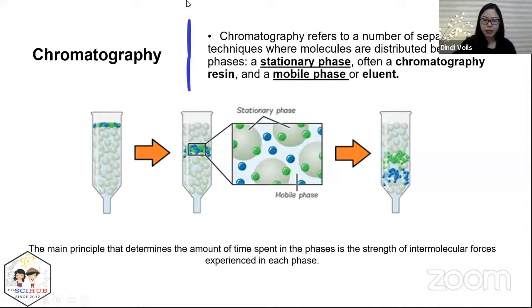Generally speaking, stationary phase—that's why it's called stationary—is because it's not moving. In chromatography, you introduce your sample, and the mobile phase is continuously flowing through your stationary phase.